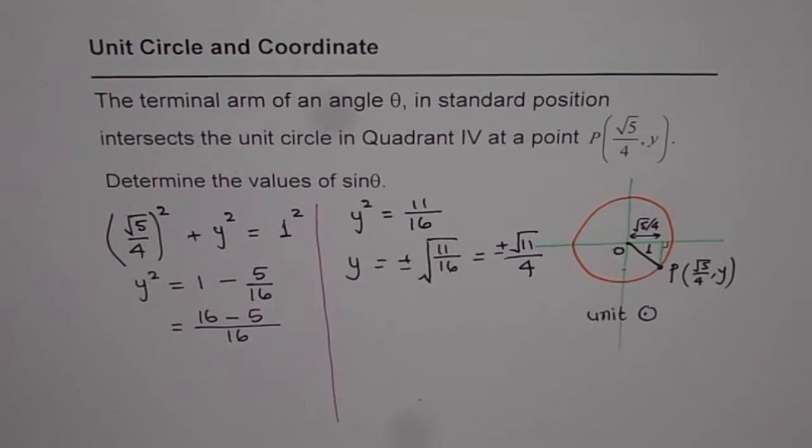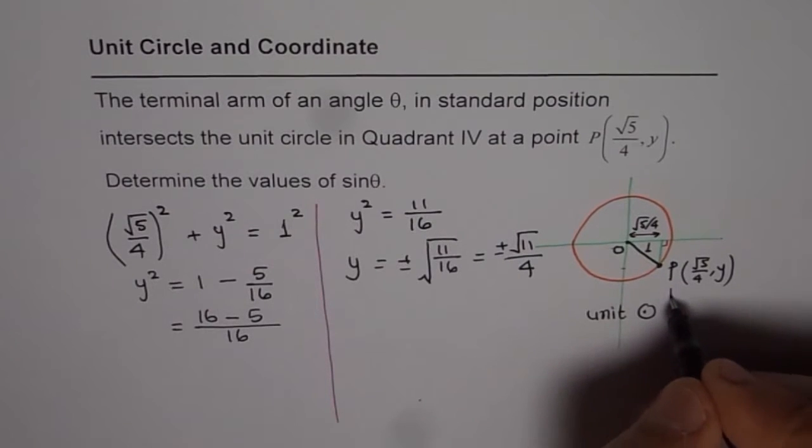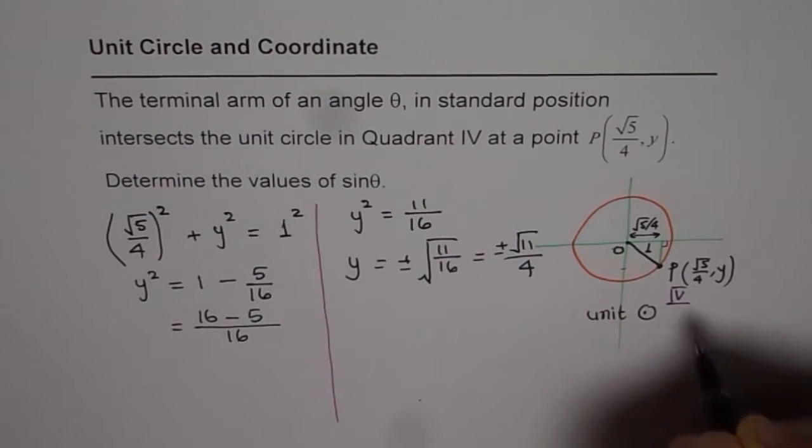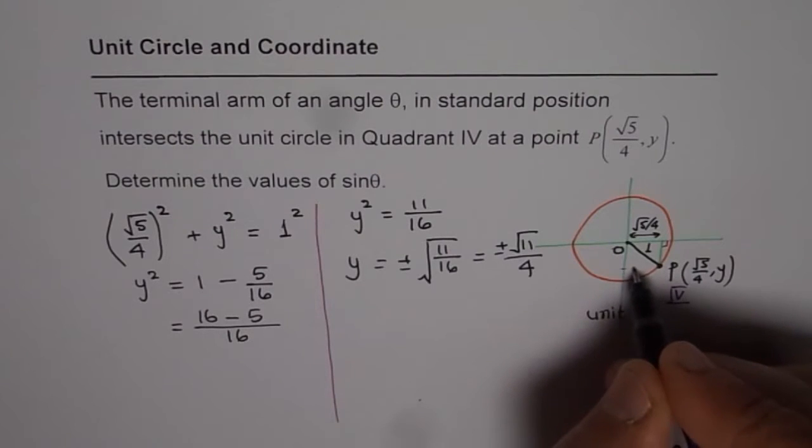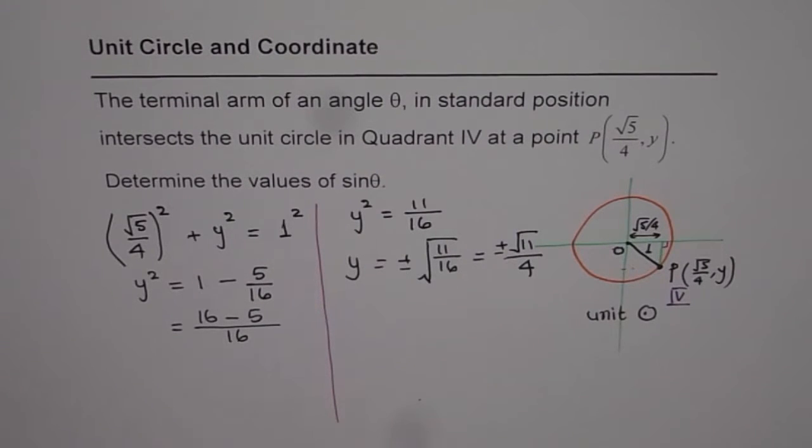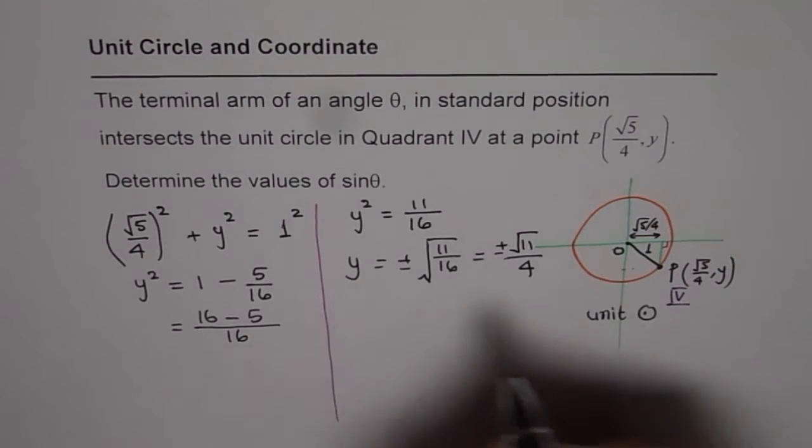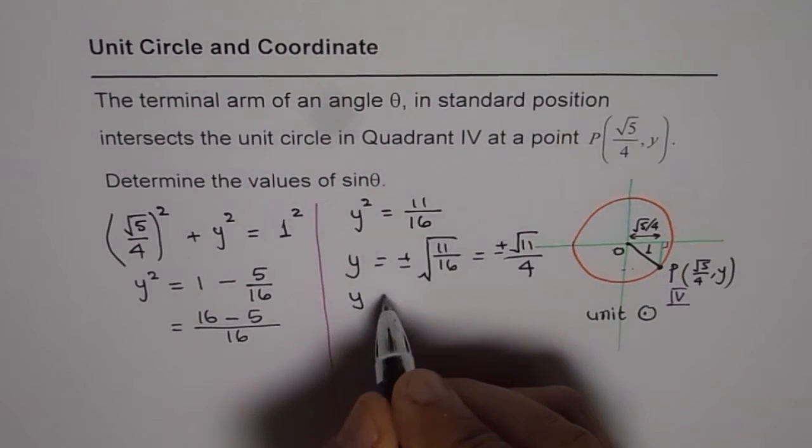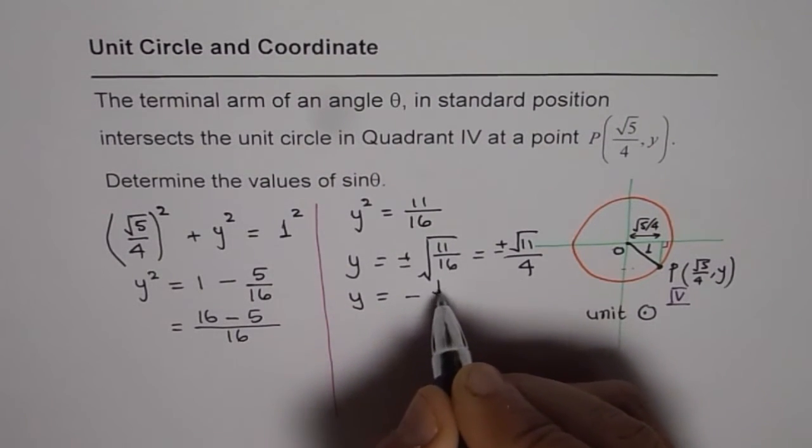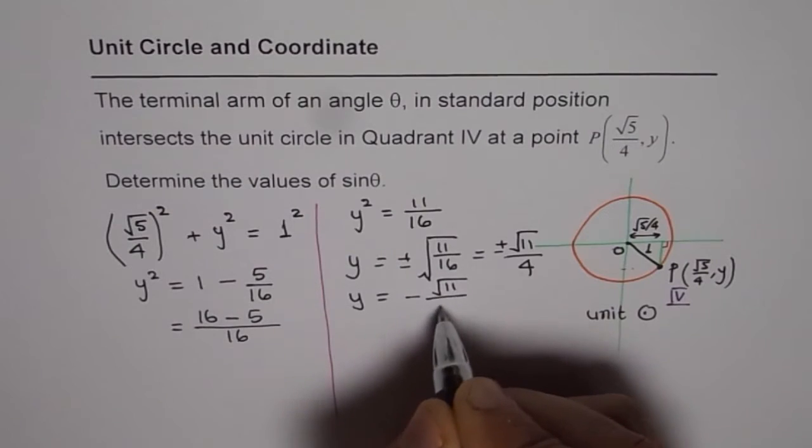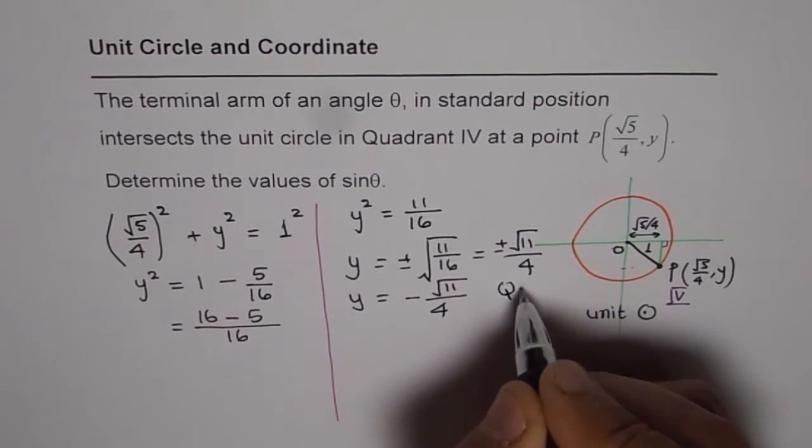Since we are in quadrant 4 what should be y? We are in quadrant 4. So y should be negative. So we'll select the negative value and in quadrant 4 we say y equals to negative square root 11 over 4. Since we are in quadrant 4.